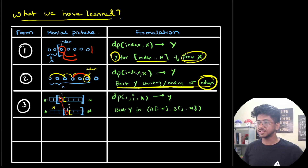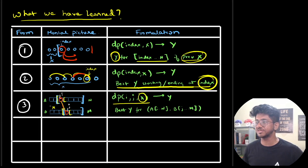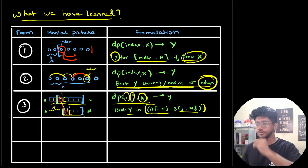In the third form, we deal with multiple sequences and matching-type problems where we have to match or change things. In that case, DP of I, J, and some X — where X is some previous aggregate across two strings, and I and J are the starting points of the two strings remaining. We find the best Y for those two strings from I to N and J to M.